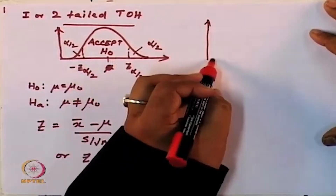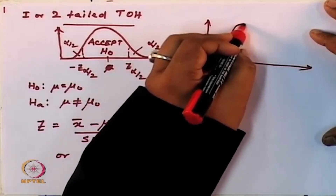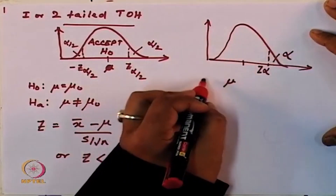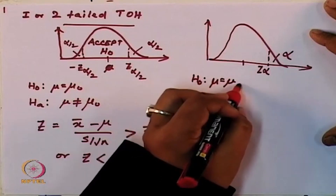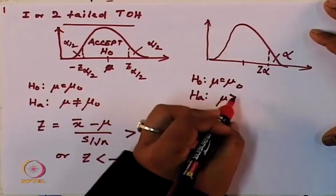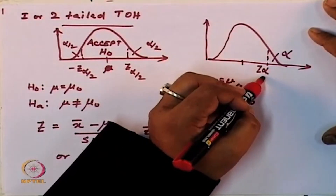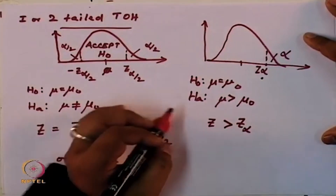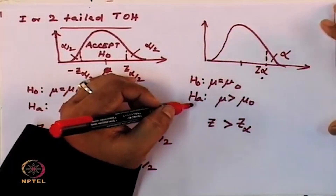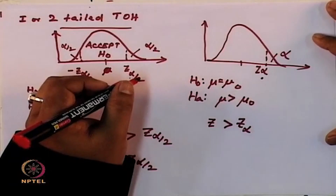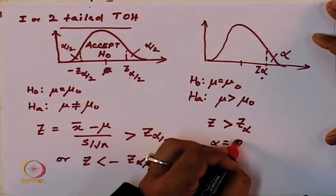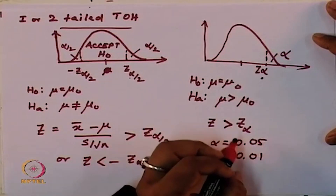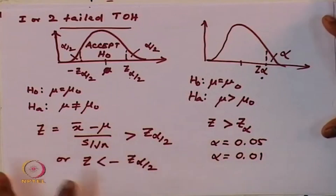For a single tailed test of hypothesis, you are interested in knowing whether your mu — so your H0 is mu equal to mu0 and alternative hypothesis is mu is greater than mu0. If your test statistic is greater than z alpha, then you will reject your hypothesis and can accept your alternate hypothesis. Alpha corresponds to the confidence level: for 5 percent confidence level you have alpha equal to 0.05, for 99 percent confidence level you choose alpha equal to 0.01, and so on.